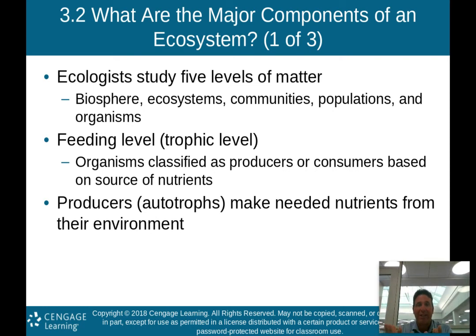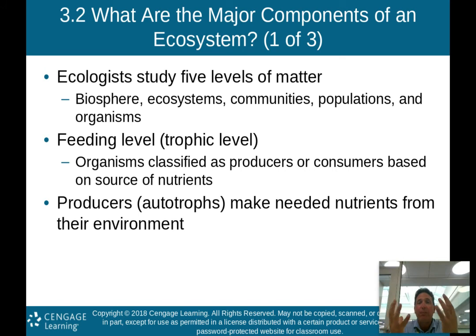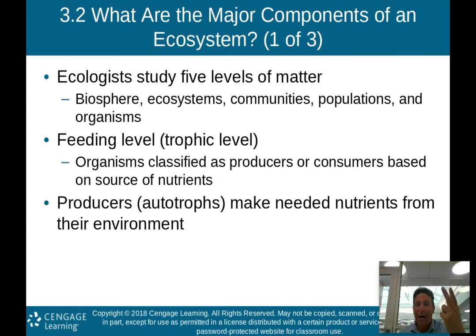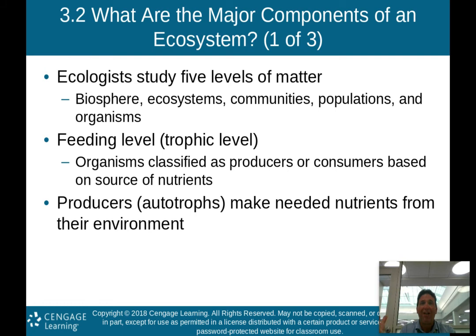Communities are certain communities of animals living in that ecosystem. Populations are the numbers of certain species living in those communities. And then we have individual organisms. So: individual organism, population of individuals, communities of all different types of organisms, the ecosystem on an even grander scale, and then the biosphere — all living things on Earth.